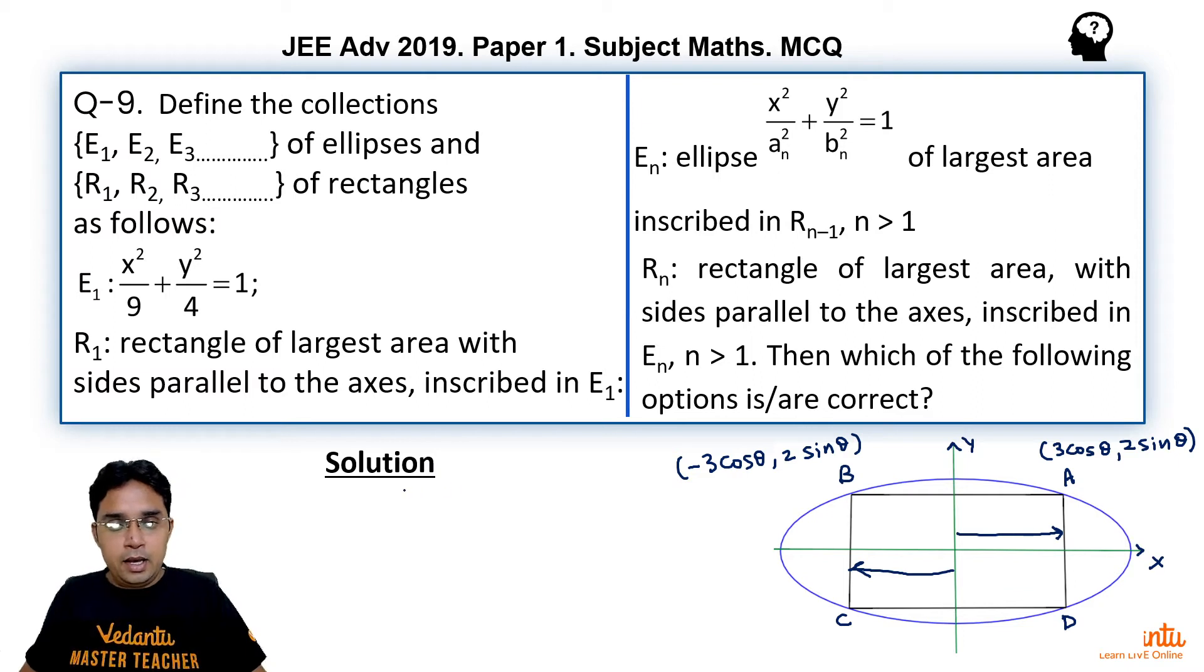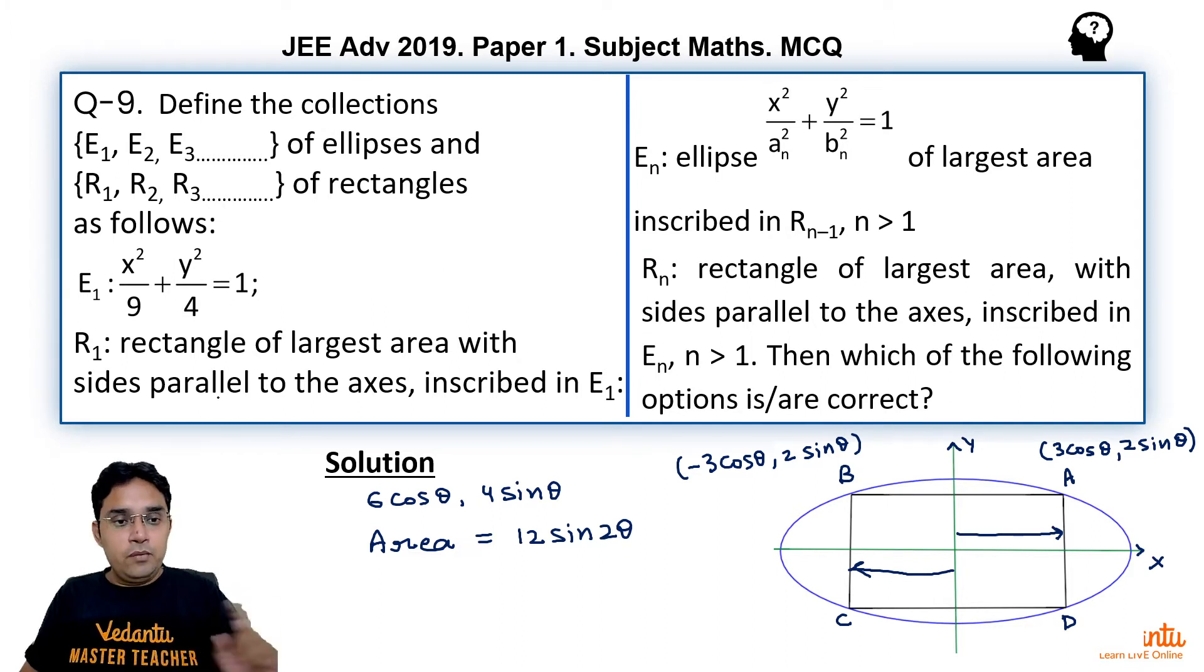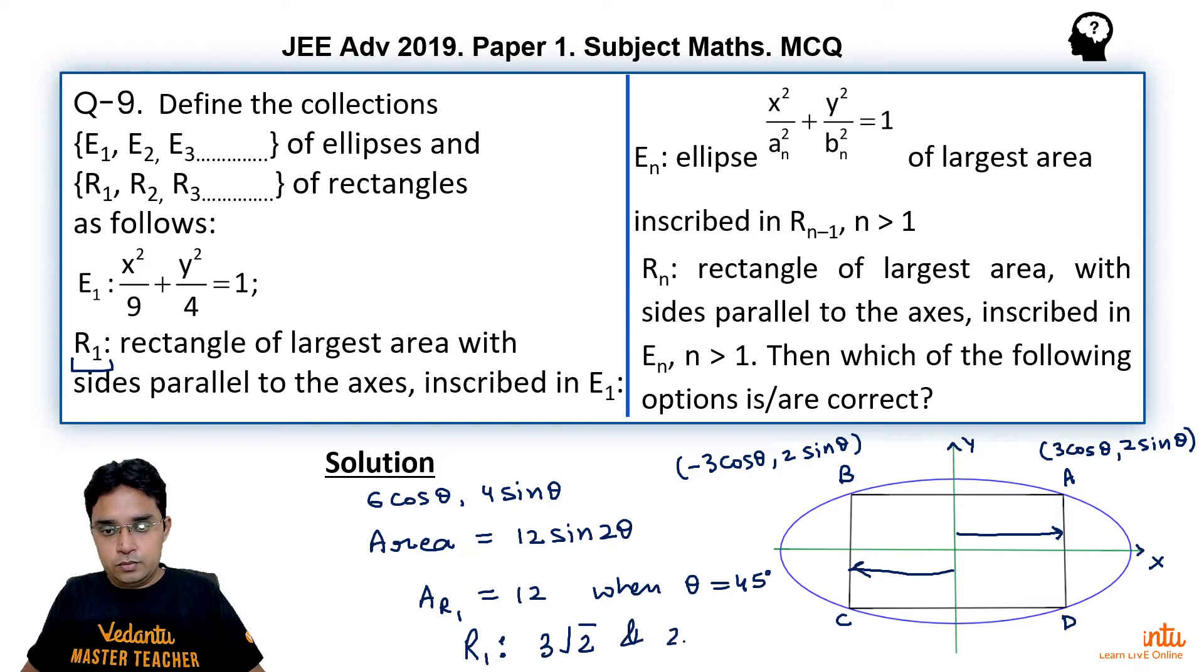Similar to this we can write coordinates of C and D. Now, sides of this rectangle are, you can easily check, 6cosθ and 4sinθ. So the area of this rectangle would be 6 into 4, 24sinθcosθ, which I am writing 12sin2θ. So the maximum value of this area, which will be actually area of this R1, would be 12. These are the sides and 12 is the area.